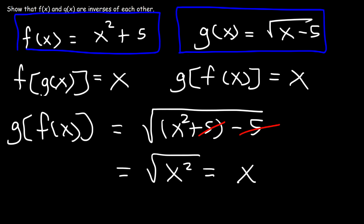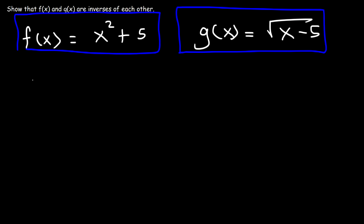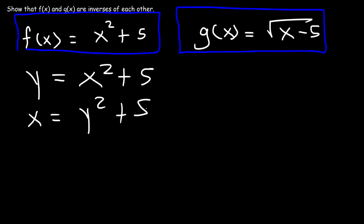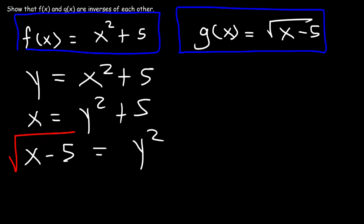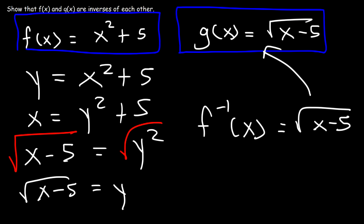Another way to confirm the answer is by finding the inverse function of f. Since f(x) and y are the same thing, replace x with y to get x = y² + 5, then solve for y. Subtracting 5 from both sides gives x − 5 = y², and taking the square root of both sides gives √(x − 5) = y. So the inverse function of f is √(x − 5), which is the same as g(x), confirming that f(x) and g(x) are inverses of each other.